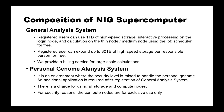The NIG Supercomputer is divided into two sections: the General Analysis System and the Personal Genome Analysis System. The Personal Genome Analysis System handles individual genomes, while the General Analysis System handles other data. Since you have applied for the General Analysis System, you cannot access the Personal Genome Analysis System.